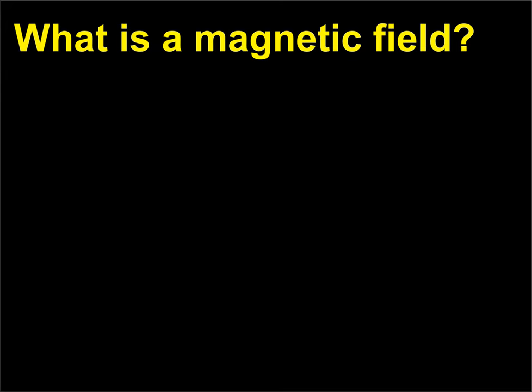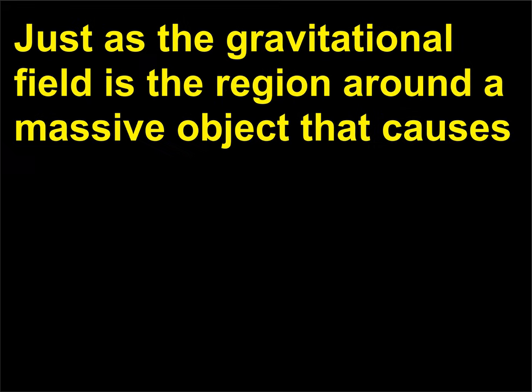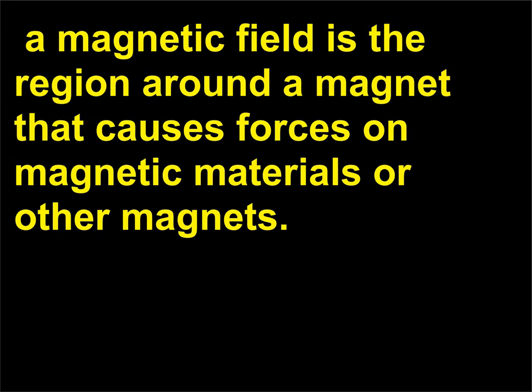What is a magnetic field? Just as the gravitational field is the region around a massive object that causes the attractive force on another object with mass, a magnetic field is the region around a magnet that causes forces on magnetic materials or other magnets.